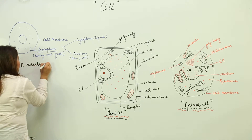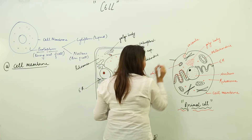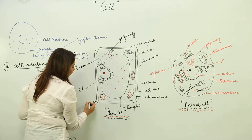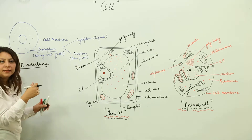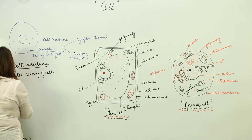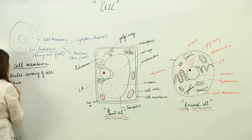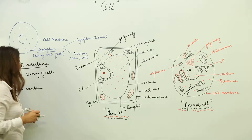As you can see, this is the cell membrane — the inner membrane in the plant cell is the cell membrane. Its characteristics: it forms the outer covering of the cell, it is very thin, and its other name is the plasma membrane.